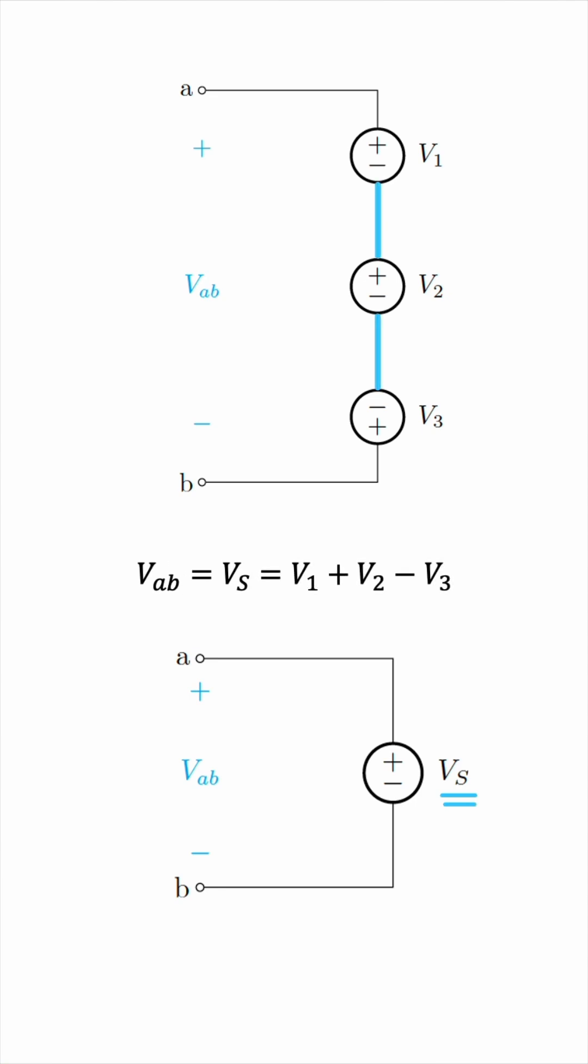A very easy way to remember this is to think of Kirchhoff's voltage law, KVL. If we were to draw a loop in the clockwise direction, like this, then by KVL, we would have negative VAB plus V1 plus V2 minus V3 equals 0. And then you can just take VAB to the other side of the equation, resulting in the same equivalence, V1 plus V2 minus V3. So that's a nice way to remember this.